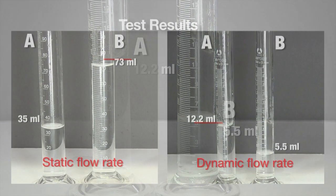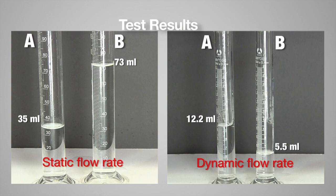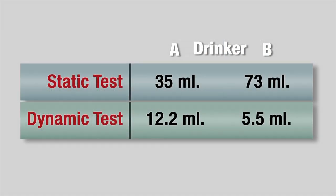This is completely opposite to the static flow rate test result. To reiterate, drinker B discharged 109 percent more water than drinker A in the static flow rate test, but drinker A discharged 120 percent more water in the dynamic flow rate test.